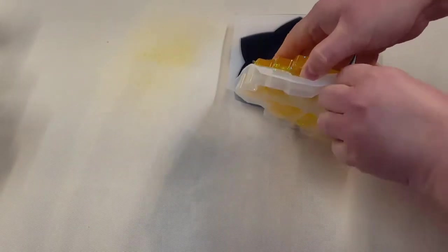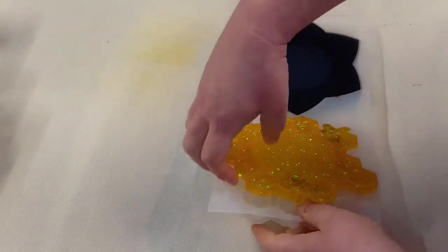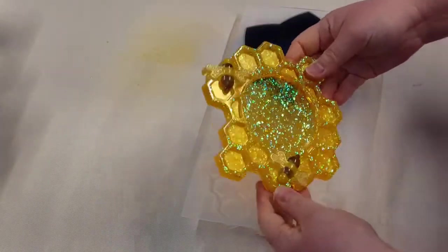So demolding you just kind of work around the edges, loosen those up, and then pull your piece right out of there.